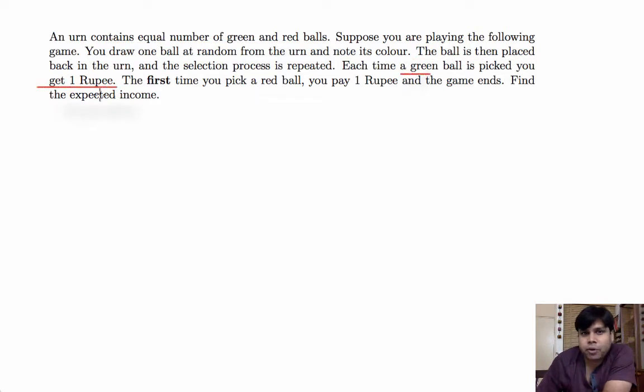When you draw a green ball you get one rupee, when you draw a red ball you pay one rupee and the game ends exactly when you pick one. So we want to find the expected income. How do we do this?